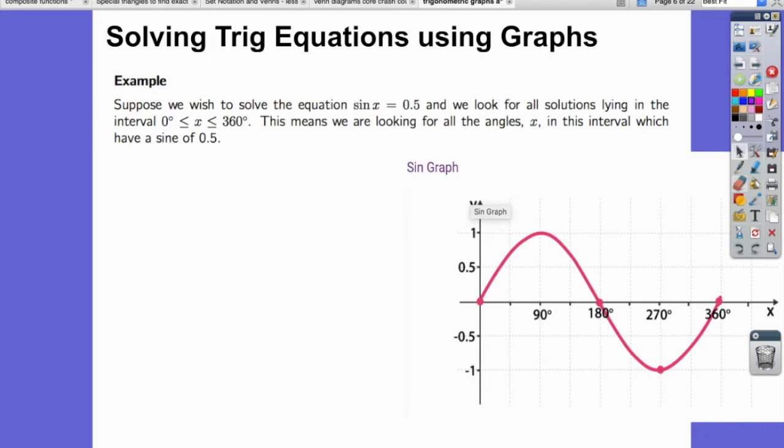Hi, we're going to follow on from the trigonometric graphs lesson to look at solving trig equations using the graphs. We've got a question here. Suppose we wish to solve the equation sine x equals 0.5, and we're looking for all solutions lying in the interval 0 to 360. This means we're looking for all the angles in this interval which have a sine of 0.5.